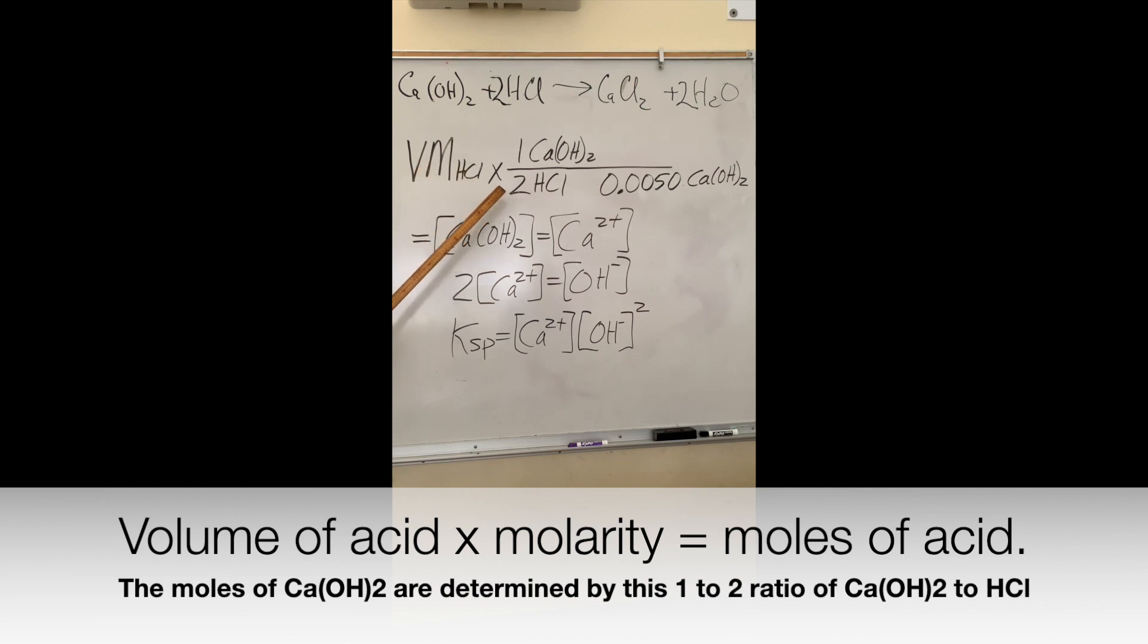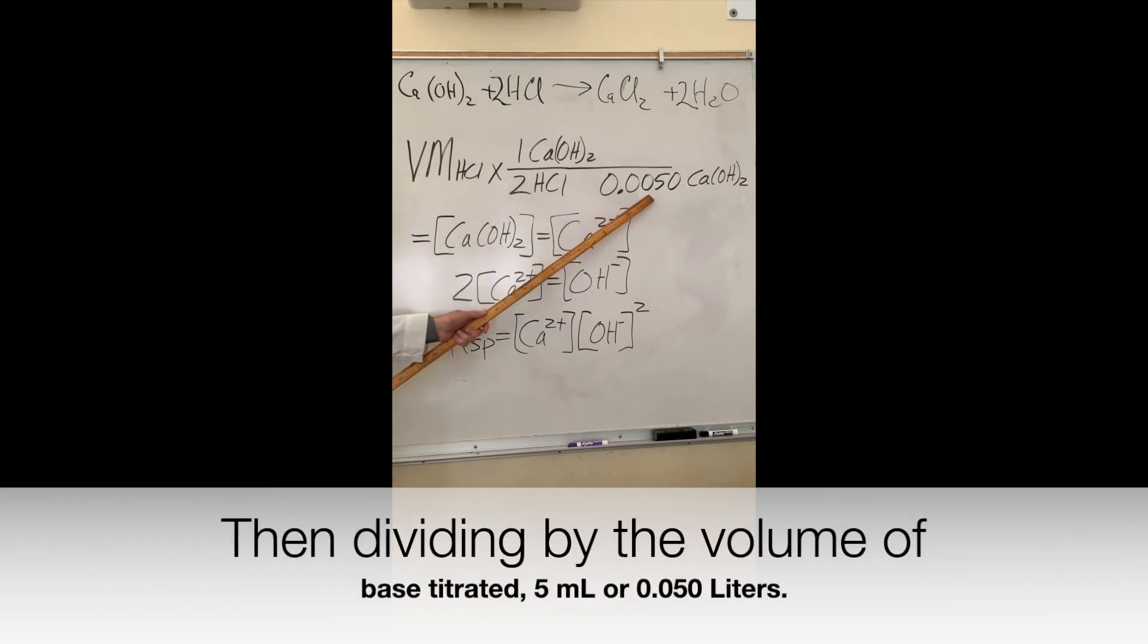The number of moles of calcium hydroxide are determined by multiplying the moles of HCl by the stoichiometric ratio, then dividing by the total volume which was used, which was five milliliters or 0.005 liters.